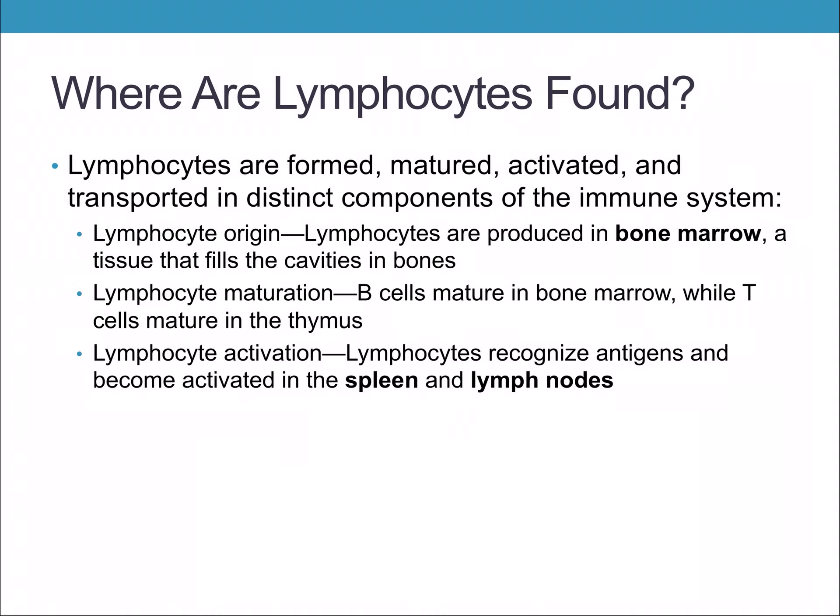Lymphocytes are produced in the bone marrow, located in the cavities of your bones — specifically at the distal and proximal epiphyses, the top and bottom parts. In a developing embryo, all of the bone marrow is red bone marrow where they're formed. B cells mature in the bone marrow, while T cells mature in the thymus — so they all start in the bone marrow, but T cells then travel to the thymus.